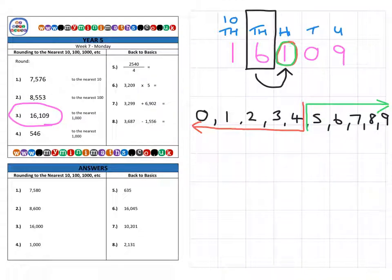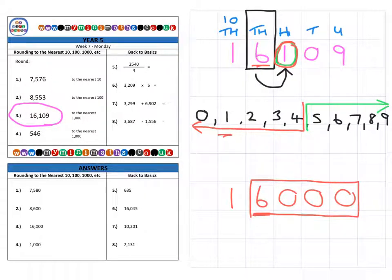So, in this case, because it's a 1, which is here, it rounds down. So, we keep the 6 as it is to give us a final answer of 16,000. And as we can see, the 6 in the thousands column has stayed the same and we've created this whole thousand here, which is what it asked us to round it to.